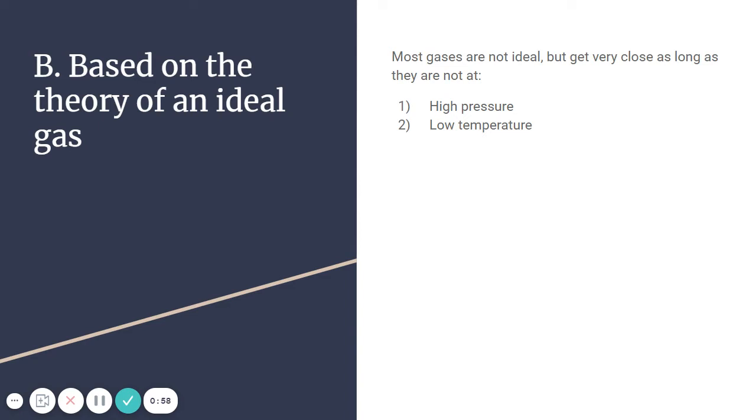So kinetic molecular theory, we typically apply to gases. Just because there's significantly less movement in solids and liquids, we tend to focus on gases when we're talking about kinetic molecular theory. Those are the atoms that are moving the fastest.